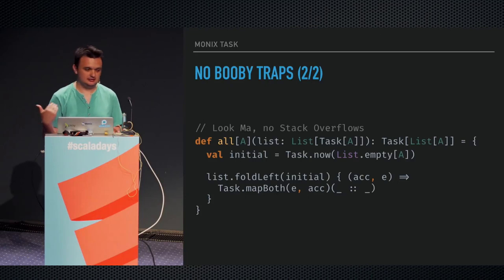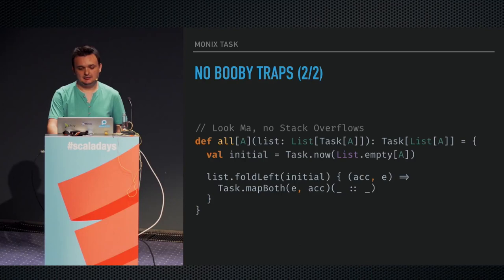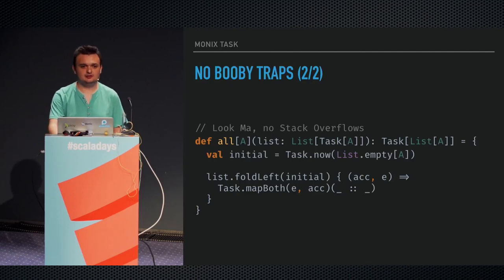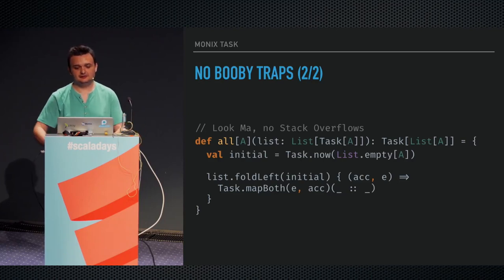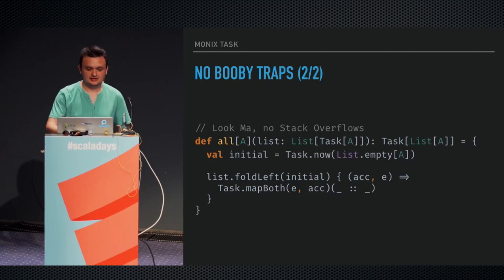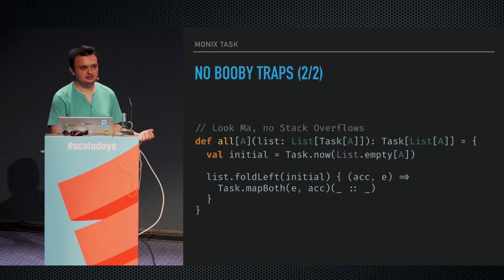Another operation that has been problematic is the map-both implementation, which executes tasks in parallel — like the applicative map2, but executing stuff in parallel. The map-both implementation in Monix can be used in loops without stack overflow concerns. This is a loop equivalent to future.sequence in Scala that takes a list of tasks and returns a task of list. This particular operation is called gather — task.gather will trigger parallel execution of the list of tasks you give it.